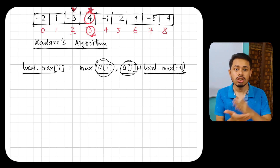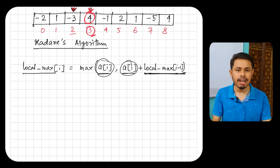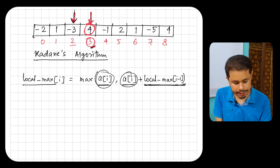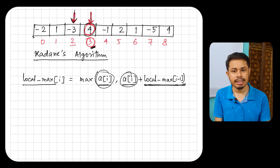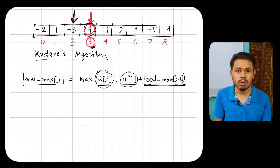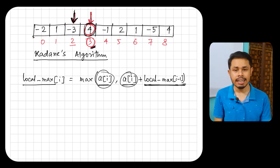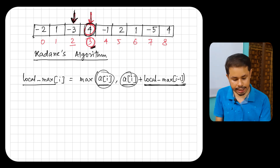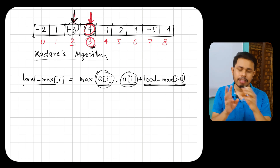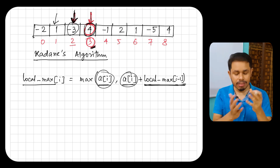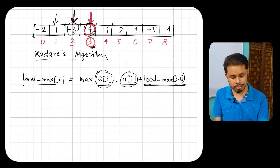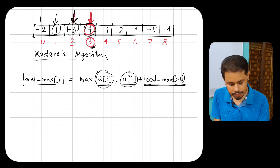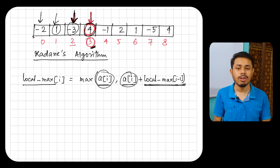So at any index i, the local maximum is the maximum of two quantities: the element at index i alone, or the element at index i plus the local maximum up to the previous index. We can recursively compute this starting from index 0 — the local max at index 3 depends on index 2, which depends on index 1, which depends on index 0.